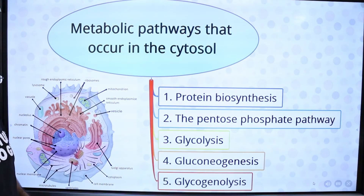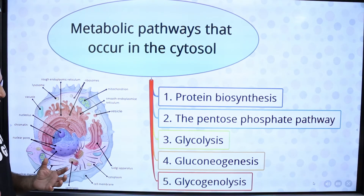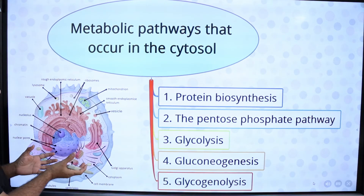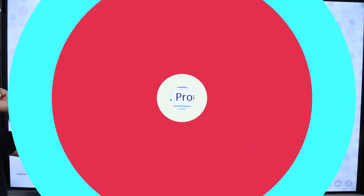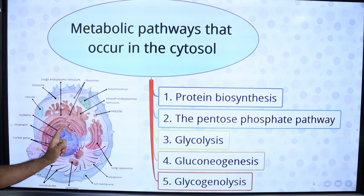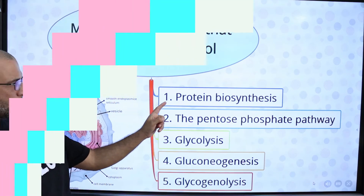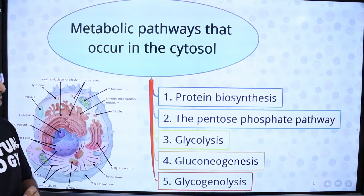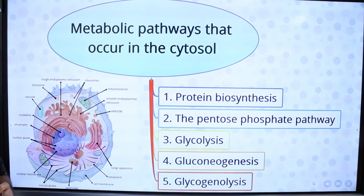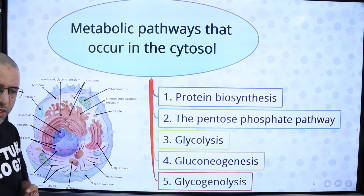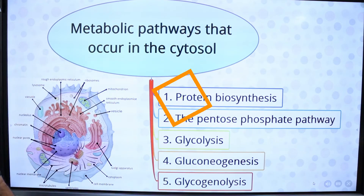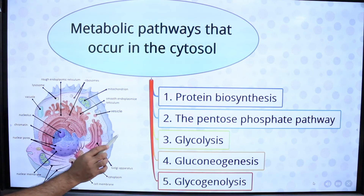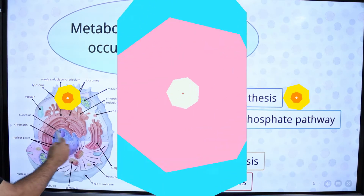What is metabolism? Metabolism is the sum of all chemical reactions taking place in a cell. Metabolic pathways that take place in the cytosol include protein biosynthesis, the pentose phosphate pathway, glycolysis, gluconeogenesis, and glycogenolysis.